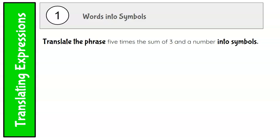Here's an example of what we are trying to do. It says, translate the phrase "five times the sum of three and a number" into symbols. So the goal is to take each one of these words and translate it into a mathematical expression, or maybe it's an equation if it has is or equals.